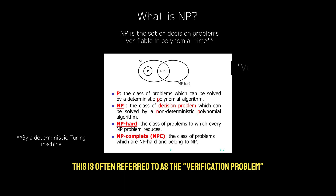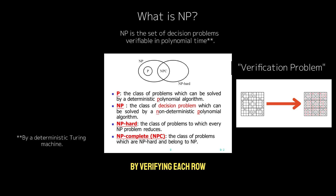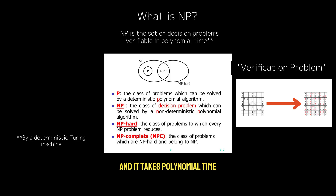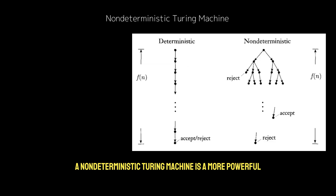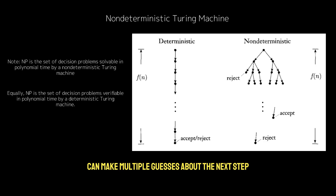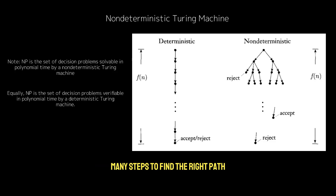This is often referred to as the verification problem. For example, consider a Sudoku puzzle. If someone gives you a completed puzzle, you can quickly check whether the solution is valid by verifying each row, each column, and subgrid in constant time. This verification step takes polynomial time relative to the size of the puzzle, typically O(n²) for an n×n grid. A non-deterministic Turing machine is a more powerful theoretical model where at each step the machine can make multiple guesses about the next step, exploring many possible solutions at once and simulating all possible paths in parallel. While it may take exponentially many steps to find the right path, once it finds a correct solution, it can verify it very quickly.